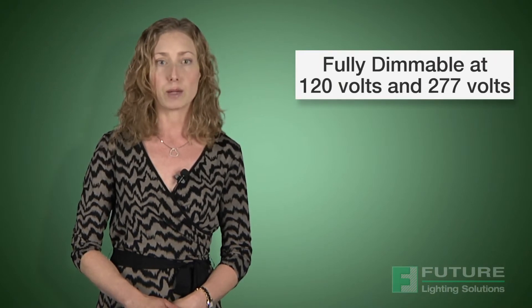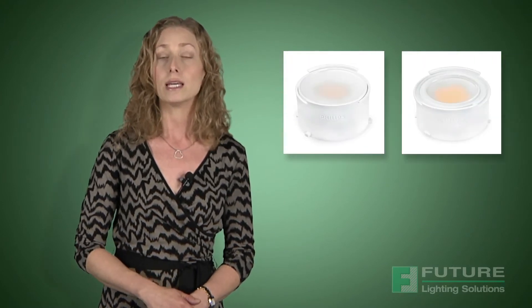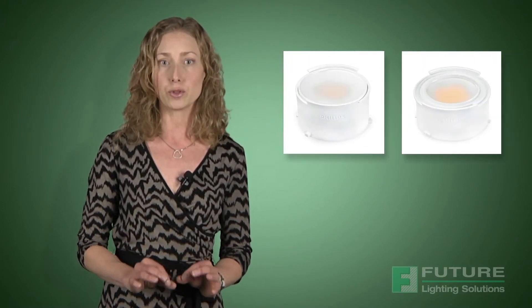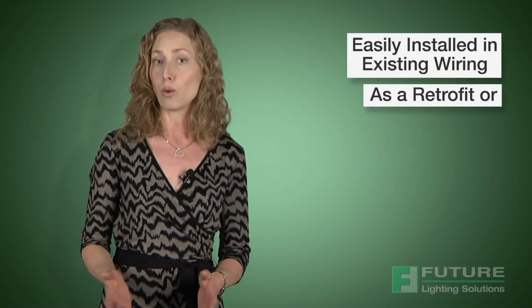This product is fully dimmable at both 120V and 277V, and it's available in 1100 and 2000 lumens. Dimmability is simple, with two-wire dimming, and luminaires fitted with Philips TDLM can be installed in existing wiring, as a retrofit, or in a new installation.